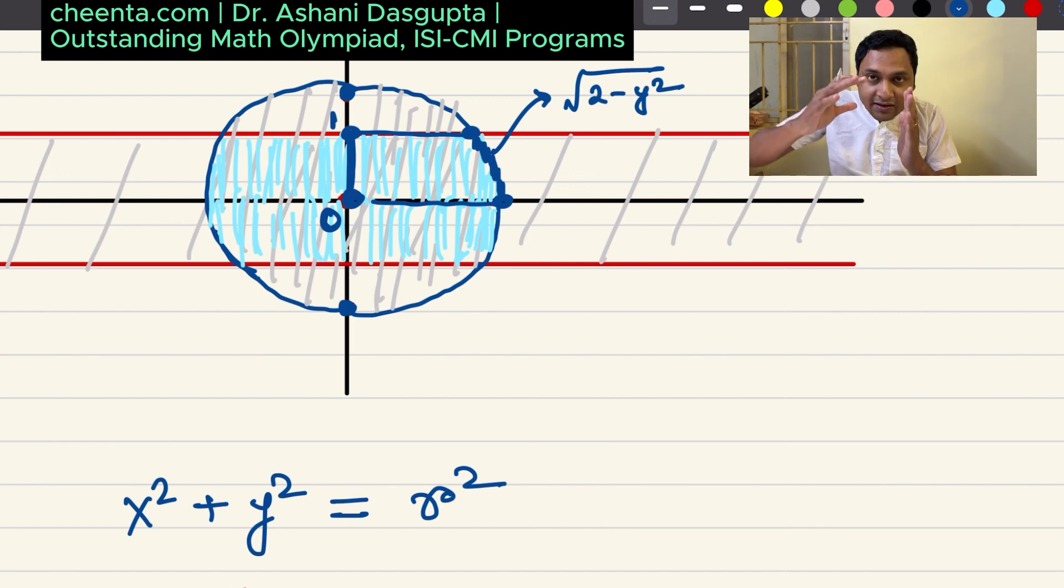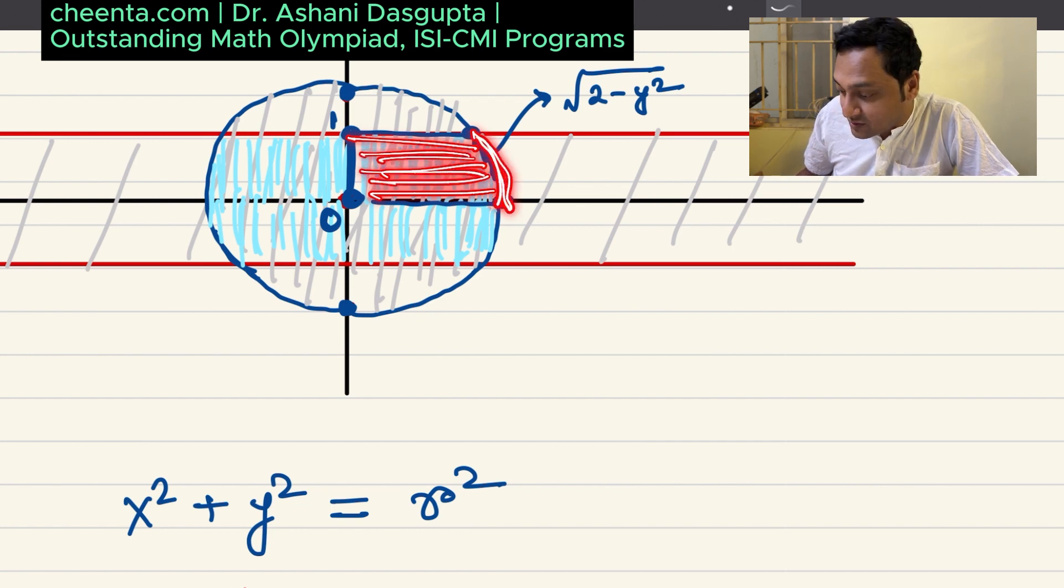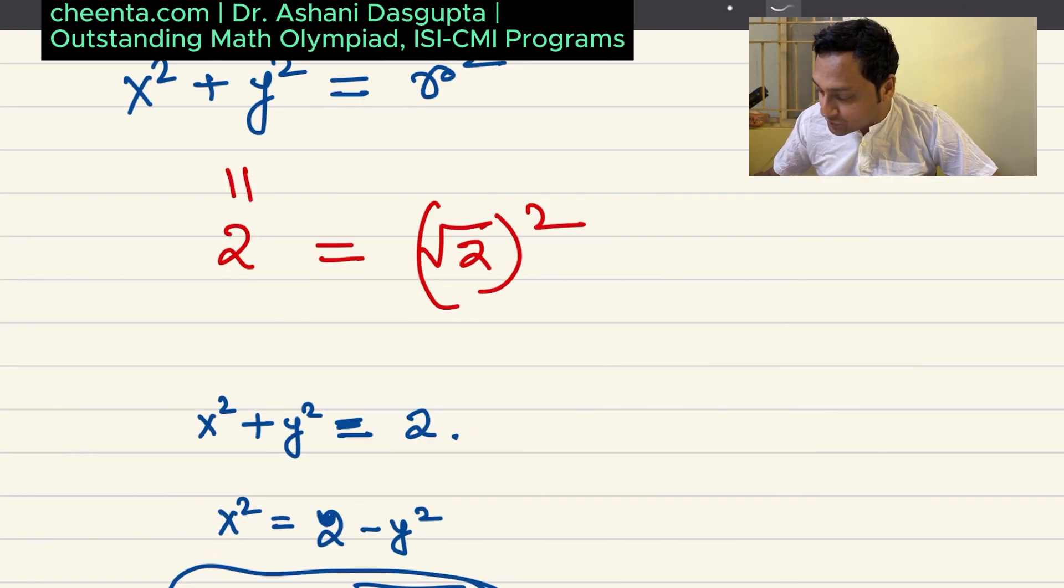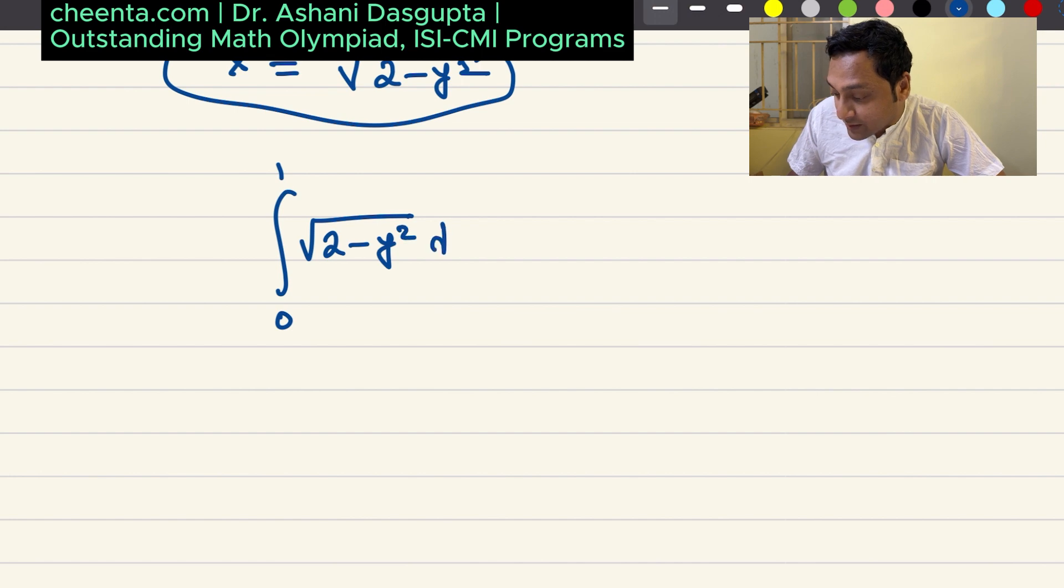If you plug in the value of y equal to 0, you will get the corresponding x value. If you plug in the value y equal to 1, you will get the corresponding x value, and so on and so forth. I'm turning the graph around, and I want to find out the area under this curve. I'll take the integration from 0 to 1, square root of 2 minus y square dy. That's the answer.